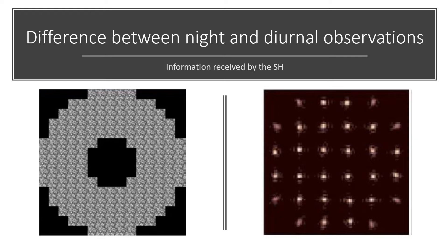Due to the nature of the Shack-Hartmann, a new algorithm is used to calculate the slopes of the subapertures. They make correlations between the different subapertures. The image of each subaperture is compared with one reference subaperture, always the same. The result is a value represented by a spot on each subaperture, which is used like the centroid in night observations.